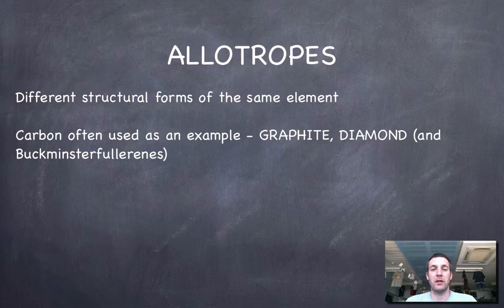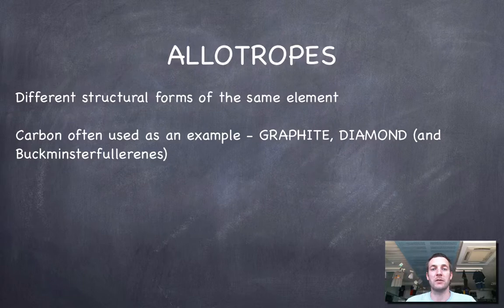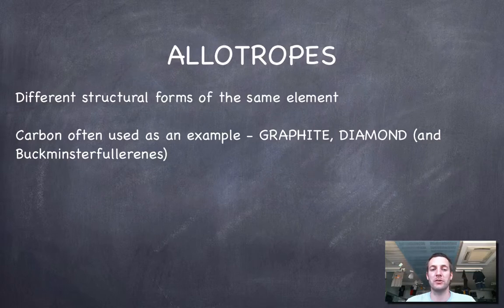Now that we've discussed that, we'll look at the ones we need specific knowledge of - the allotropes of carbon. What are allotropes? This is an important definition to know. They are different structural forms of the same element.